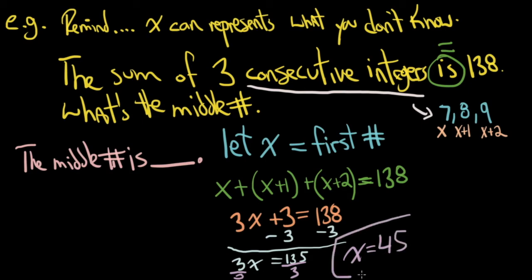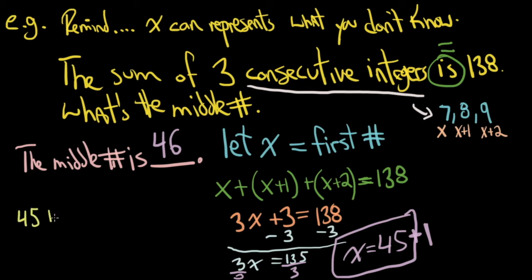That's your answer, right? No! I asked you what the middle number is. So I need to add 1 to that. My actual answer is 46 — that's the middle number. Remember I said always check. So if the three consecutive numbers are 45, 46, and 47, does that equal 138? Using my calculator — it does equal 138! So those are consecutive integer problems.